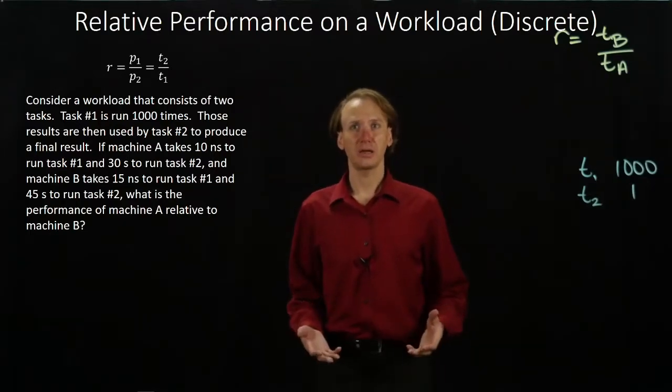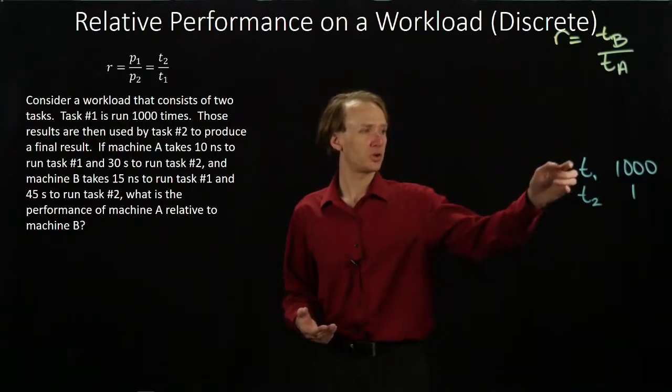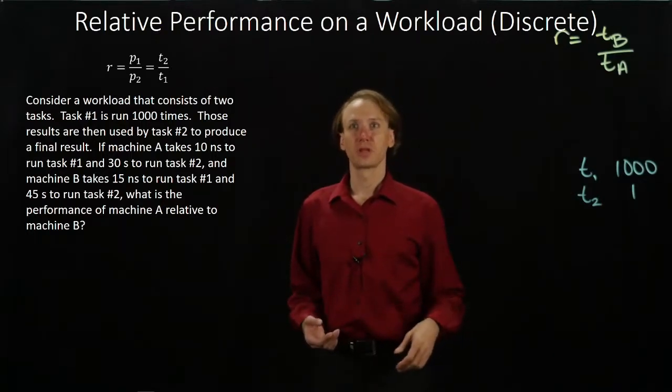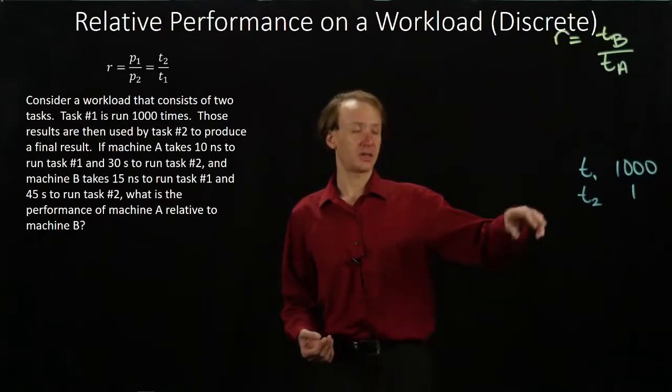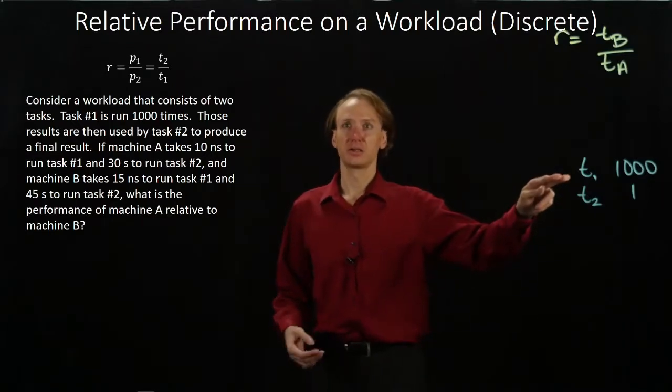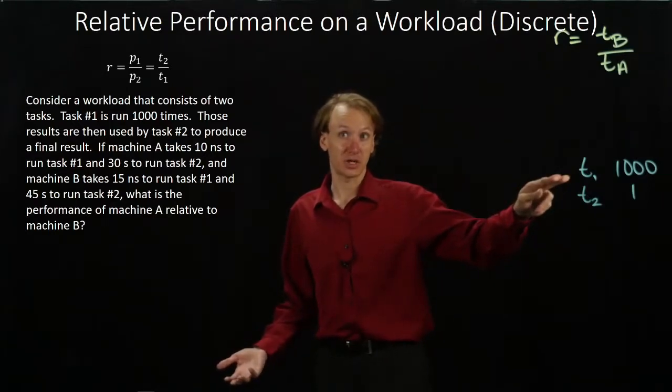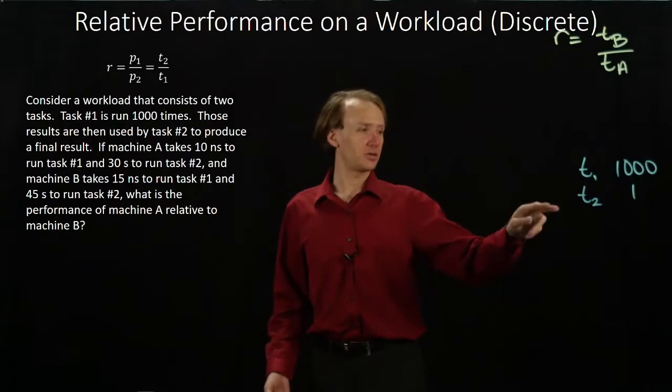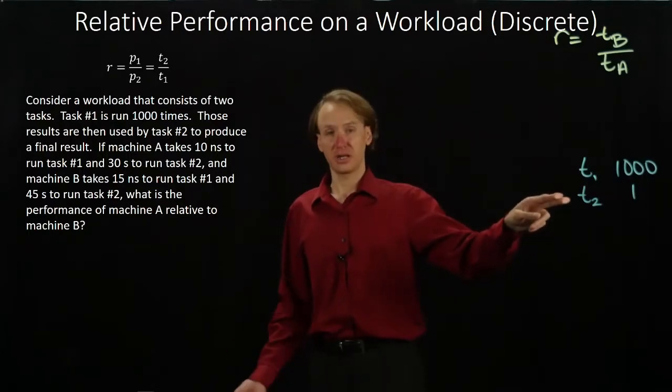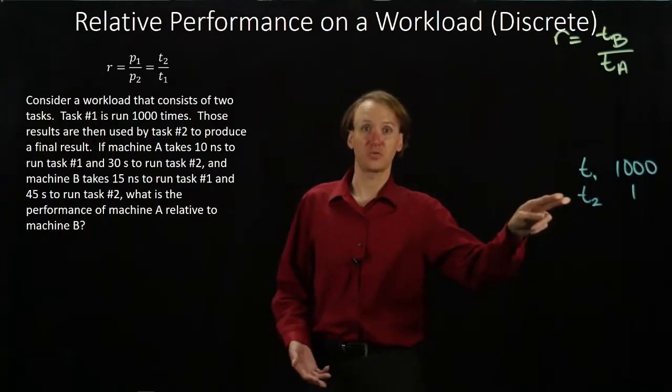Machine A and machine B each take a different amount of time to run these two tasks. Machine A runs task number one in 10 nanoseconds. Machine B takes 15 nanoseconds. On the other hand, for task number two, machine A takes 30 seconds, machine B takes 45 seconds.